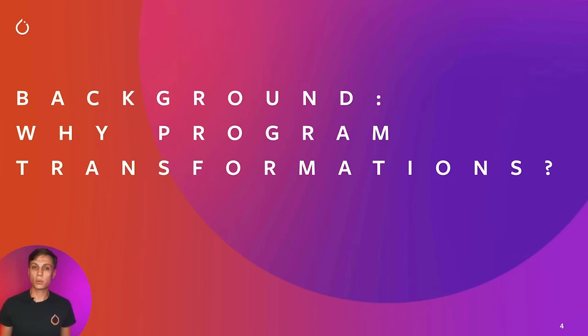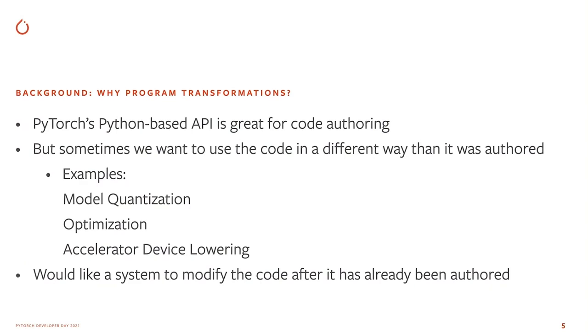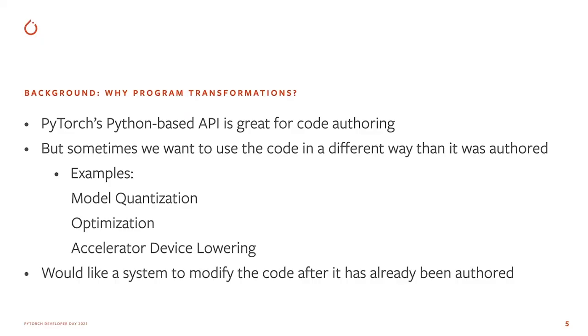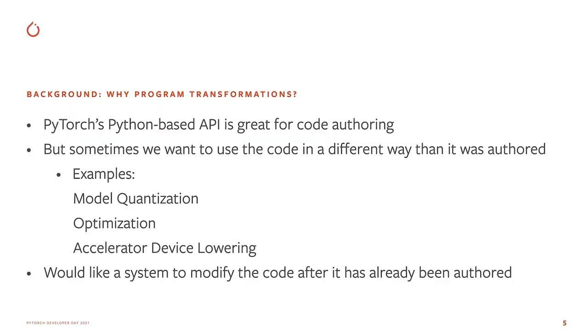So first, let's start with some background. Why do we need program transformations? PyTorch's Python-based API is great for code authoring — it allows you to use the flexible and friendly Python language and access the entirety of the Python library ecosystem. On the other hand, sometimes we want to use PyTorch code in a different way from how it was authored. Examples include model quantization, applying optimizations to make it run faster, or moving the code to a specialized accelerator. These transformations often need to see the code in a form other than Python. Historically, deep learning frameworks and compilers have consumed graph representations for such transforms. In summary, we would like a system that allows modifications to PyTorch programs after they have already been authored.